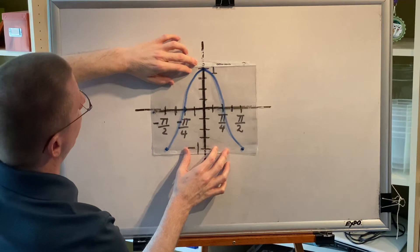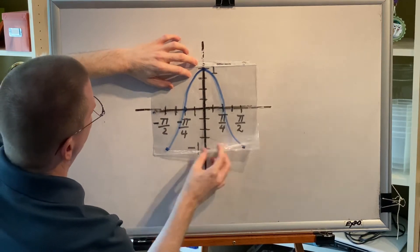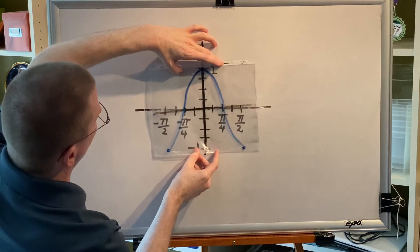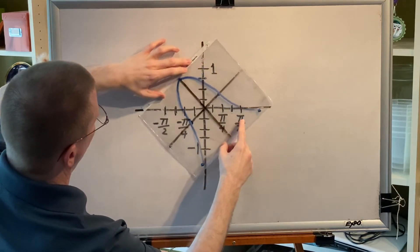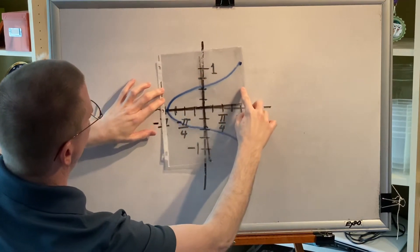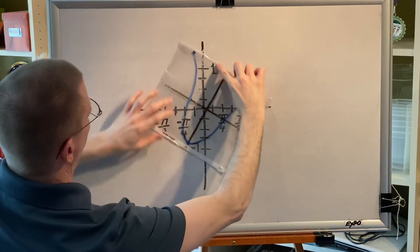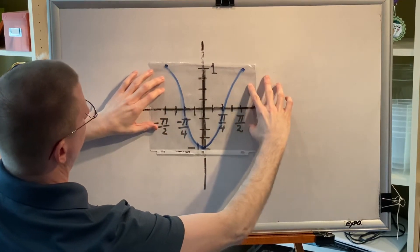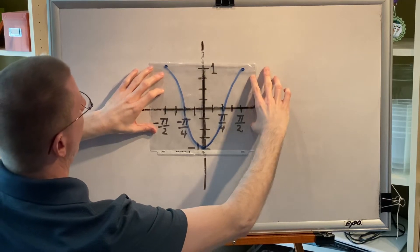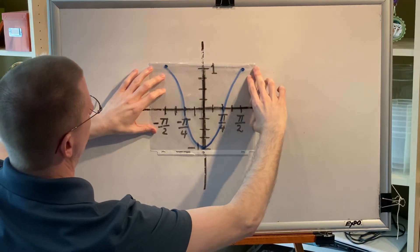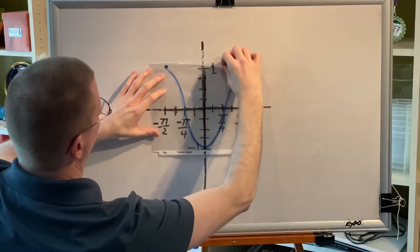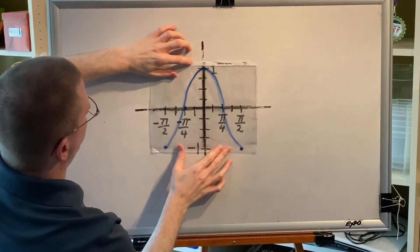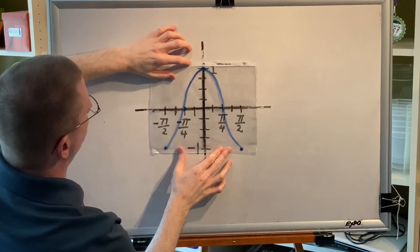Now we'll test for origin symmetry. We're starting with a mountain. We spin 180 degrees around the origin — there's 90 degrees, there's 180 degrees. And you can see what we have here is a valley. The picture changed. This is the after; this is the before. They're different, so there is no origin symmetry.